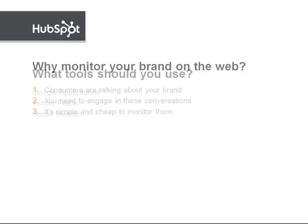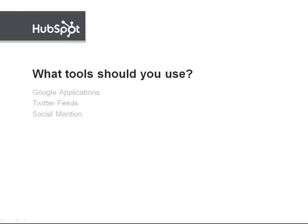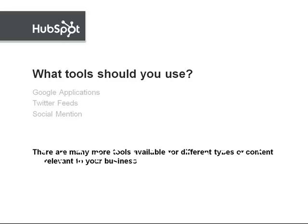In this video, we're introducing three tools: Google applications, Twitter feeds, and Social Mention. There are, however, many more tools available on the web to monitor different types of content relevant to your business.